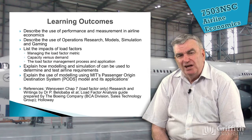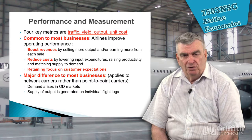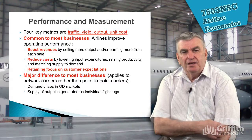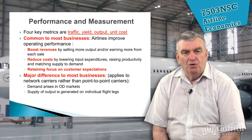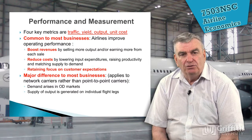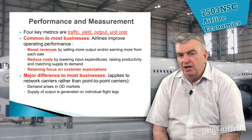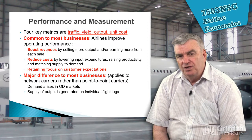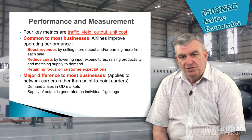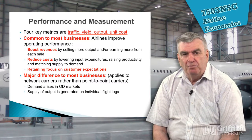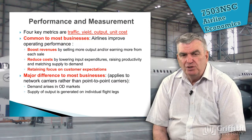In this lecture, we're just giving you a feeling for the sorts of measurement we want to look at. Looking at performance and measurements, we have four key metrics: traffic — what you're carrying in terms of passengers and freight; yield — the output that you get; and unit cost, because the cost per available seat-kilometer, or CASK, is really important. These metrics are common to most businesses.